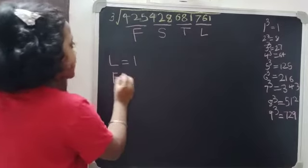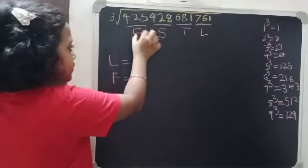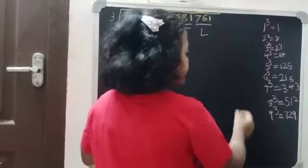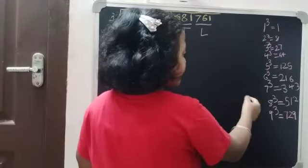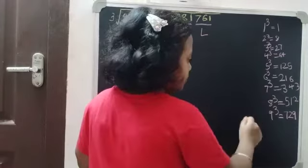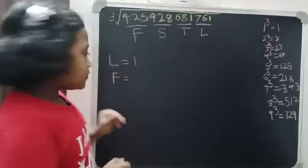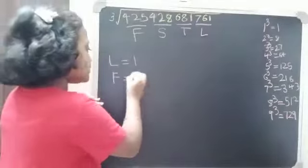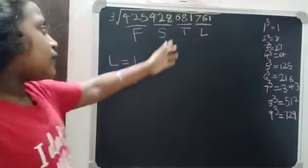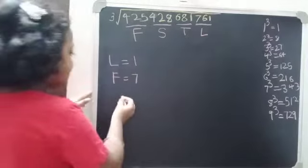Now we are going to solve F. F is equal to 425. Since 425 is in between 7 cube and 8 cube, and 7 cube is smaller than 425, F is 7.